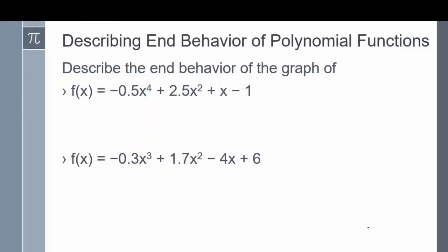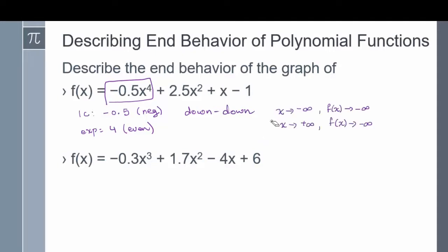Let's look at some examples on determining end behavior. In our first example, we have negative 0.5x to the power of 4 plus 2.5x squared plus x minus 1. Before figuring out the end behavior, make sure the polynomial is in standard form — starting with the highest exponent down to the constant. This one is in standard form, so I look at the first term: the leading coefficient is negative 0.5, which is negative, and the exponent is 4, which is even. From the chart, negative coefficient with even exponent gives a down-down end behavior: as x goes to negative infinity, f of x goes to negative infinity, and as x goes to positive infinity, f of x goes to negative infinity.